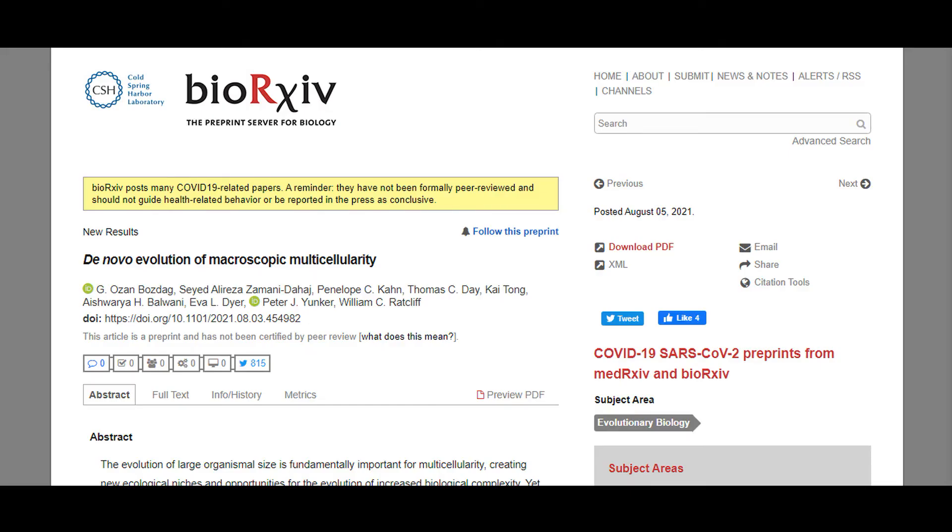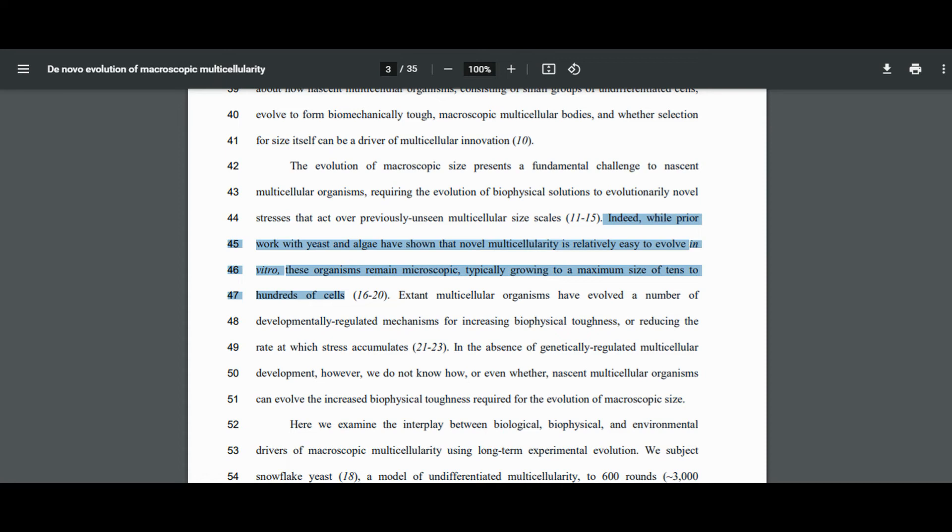The final experiment we are going to investigate was published this year. G. Ozsenbosdag et al. published an article titled De Novo Evolution of Macroscopic Multicellularity. We've talked about multicellularity experiments in the past. See our video Misunderstanding Multicellularity for more information. This study writes, indeed, while prior work with yeast and algae have shown that novel multicellularity is relatively easy to evolve in vitro, these organisms remain microscopic, typically growing to a maximum size of tens to hundreds of cells. The researchers, however, wanted to understand the genetic elements involved in transitioning not just to multicellularity, but to macroscopic multicellularity.